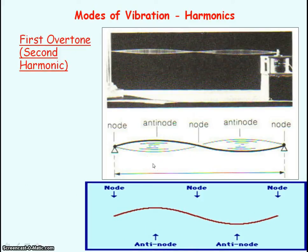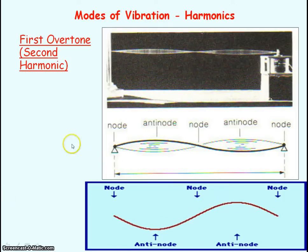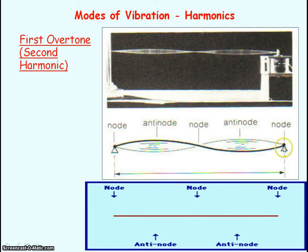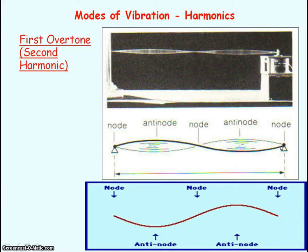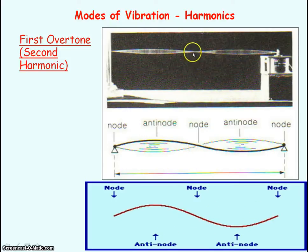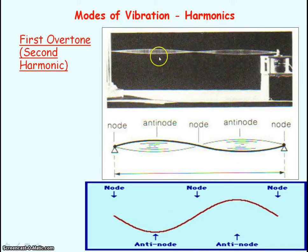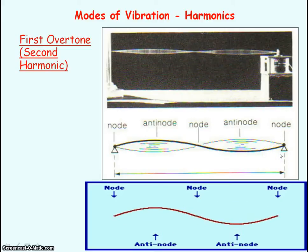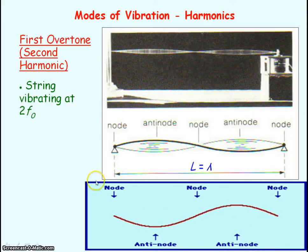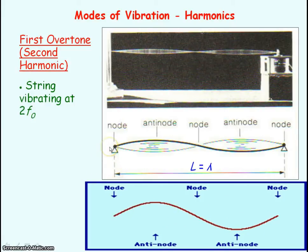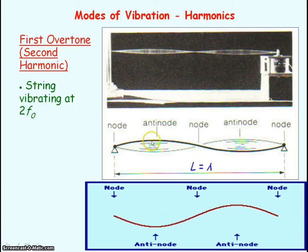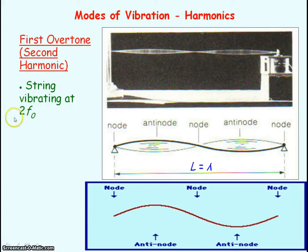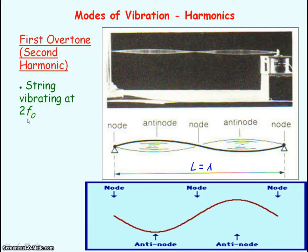The second harmonic for a stretched string again has nodes at each fixed end, but now we have two loops of the standing wave pattern — a node at the centre and two anti-nodes between the nodes. The length of the string now represents a whole wavelength. The wavelength has halved compared to the first harmonic, so the frequency of vibration has doubled — it is two times the fundamental frequency.